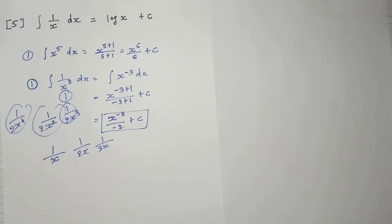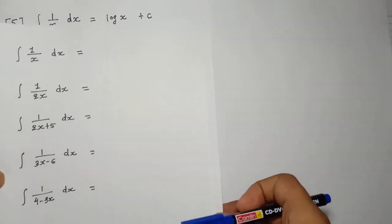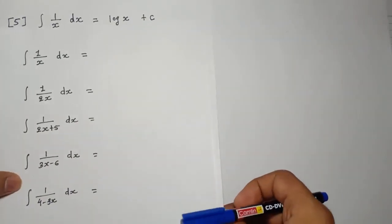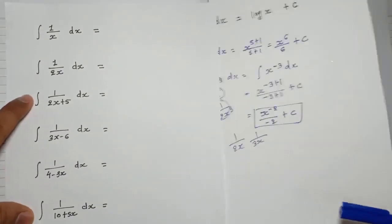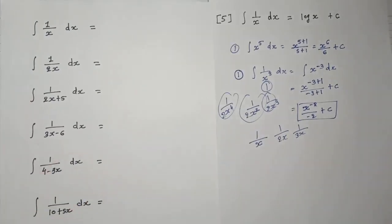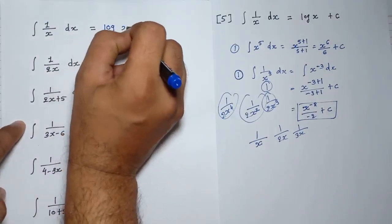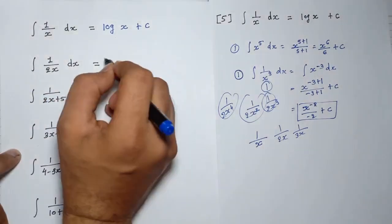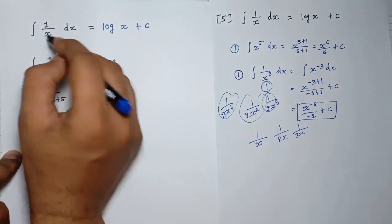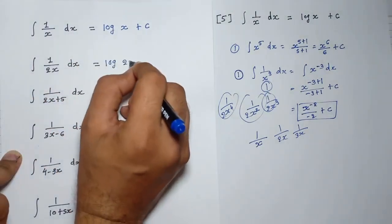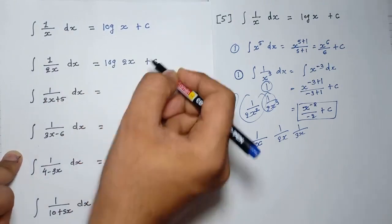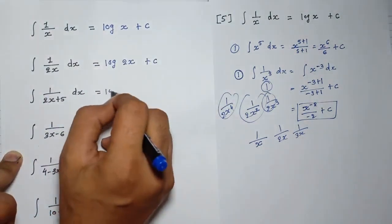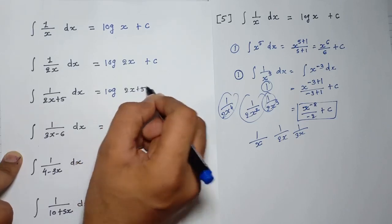Let's take one more example. You can see that 1 upon x is given — its integration will be log x. Now, 1 divided by 2x is given — its integration will be log 2x plus c. And 1 divided by 2x plus 5 — its integration will be log(2x + 5).